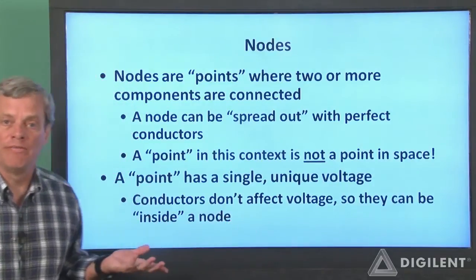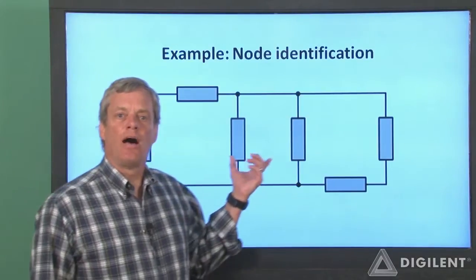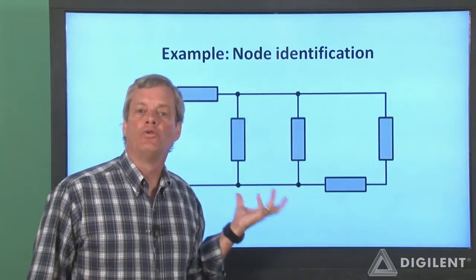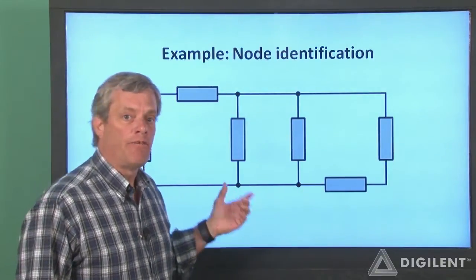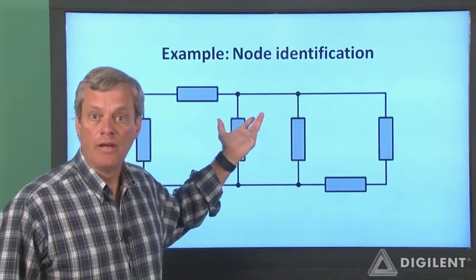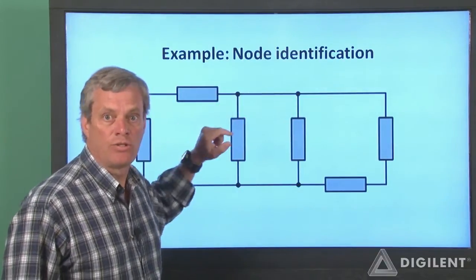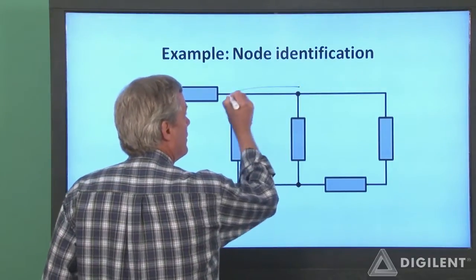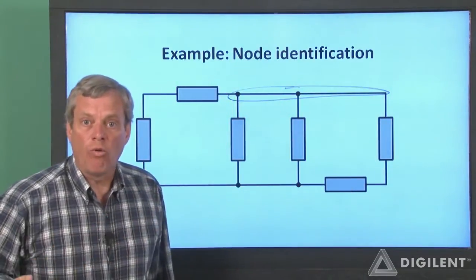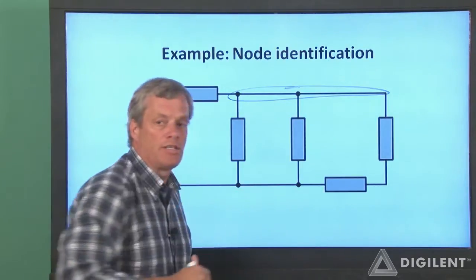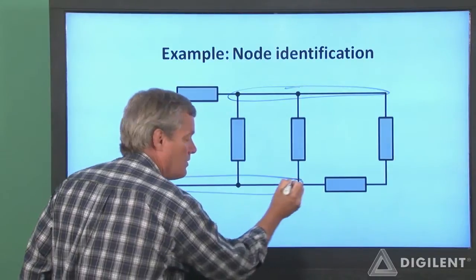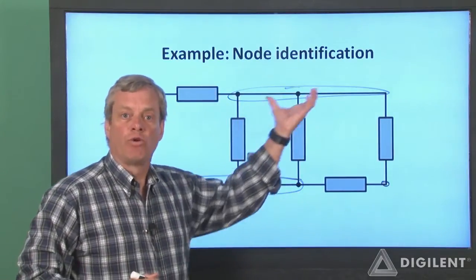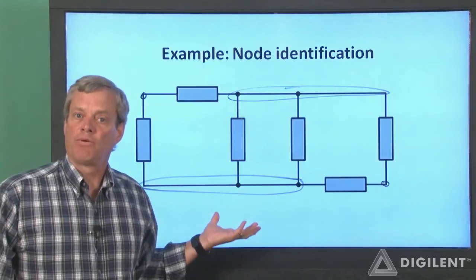Let's look at what this means in terms of our previous example. Recall that the circuit components are represented by the gray boxes and the lines are perfect conductors. We want to identify nodes on this circuit. It's tempting to identify this point and this point as being separate nodes. However, there's only a perfect conductor between these two, so the voltages here and here are always the same — these two points are actually both in the same node. Likewise, these perfect conductors cause these two points to be within the same node. These points also constitute nodes, so this circuit has four nodes altogether. Now you know how to identify nodes in a lumped parameter circuit.